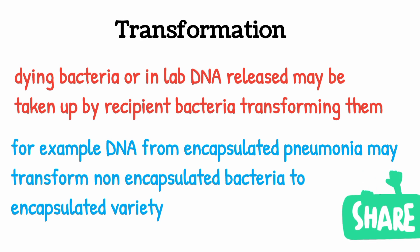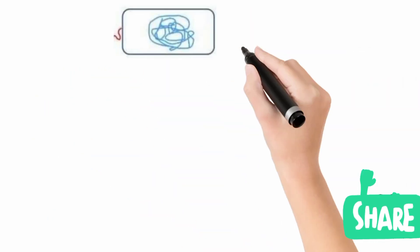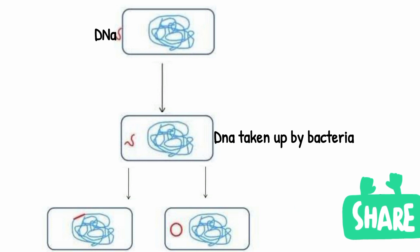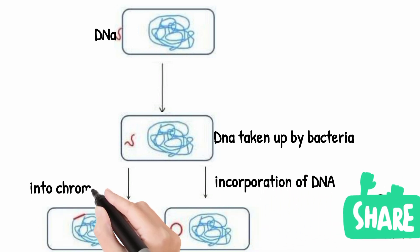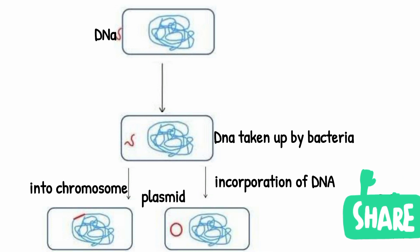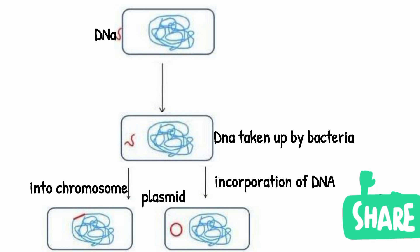The non-encapsulated bacteria, which do not have a capsule, will be transformed into encapsulated bacteria after taking up DNA, giving them more pathogenic properties. In the figure, we have DNA and a recipient bacteria. The recipient bacteria takes up the DNA, and finally the DNA becomes either a part of the chromosome or a part of the plasmid, which is extra-chromosomal DNA. This gives special properties to those bacteria, as in the case of non-encapsulated bacteria acquiring a capsule through transformation.